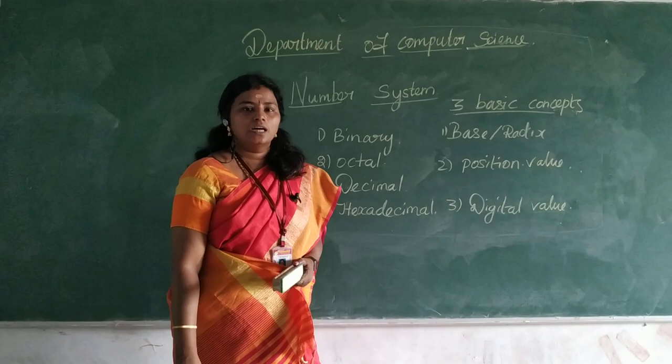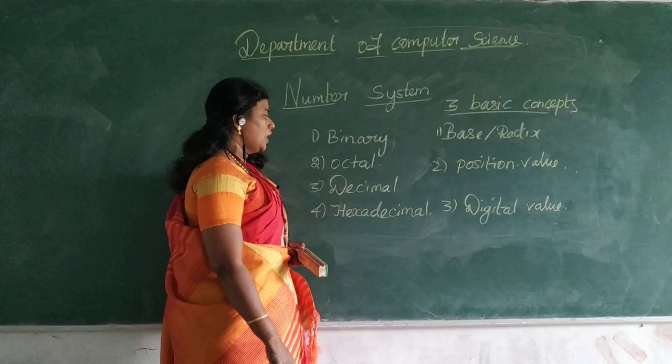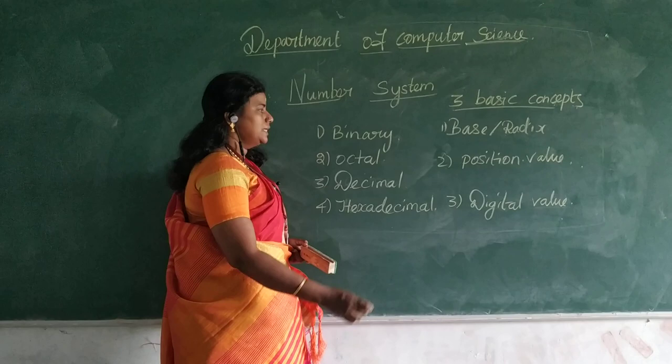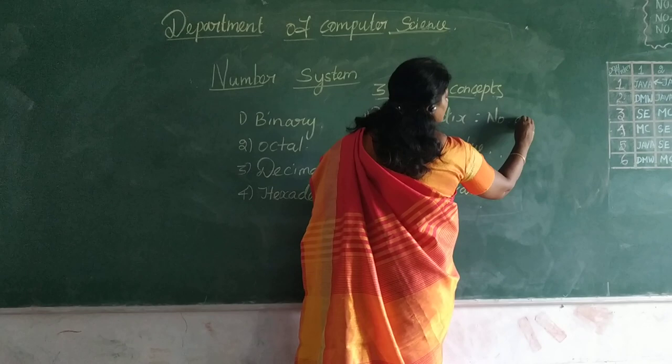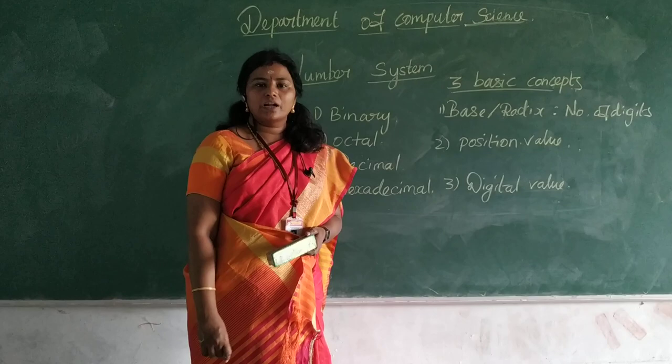The first concept is base or radix value. For example, in binary there are 2 digits used, that is 0 and 1. In octal, there are 8 digits used, that is 0 to 7. In decimal, there are 10 digits used, that is 0 to 9. In hexadecimal, there are 16 digits used. So base or radix means the number of digits.